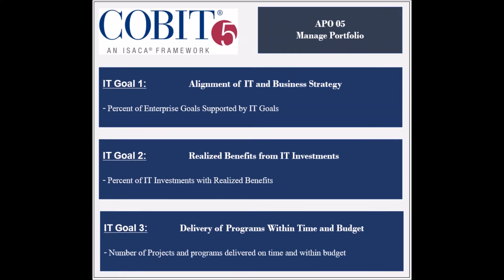The process supports three IT-related goals. The first goal is to ensure alignment of IT and business strategy, and its achievement is measured by the percent of enterprise goals supported by IT strategic goals, and by the stakeholder satisfaction level with the portfolio of programs and services.